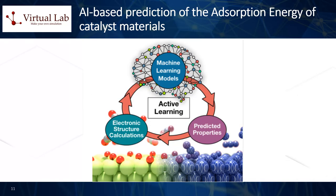Let us now address in more detail the topic of AI-based prediction of the adsorption energy of catalyst materials. Adsorption energy is one of the most important factors for calculating the catalytic activity of a material. The adsorption energy, given the surface of a certain catalyst material and its corresponding adsorbate, is defined as the energy difference when the adsorbate is adsorbed on the surface and then detached. Its value can be computed from first principles via DFT techniques, and given enough training data, it can also be predicted by constructing an AI model.